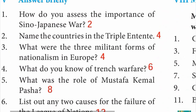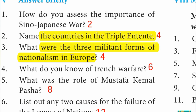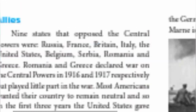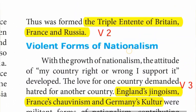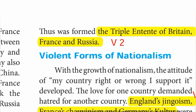Second question: name the countries in the Triple Entente. The Triple Entente comprised Britain, France and Russia — these are the three countries. The Triple Entente are Britain, France and Russia.